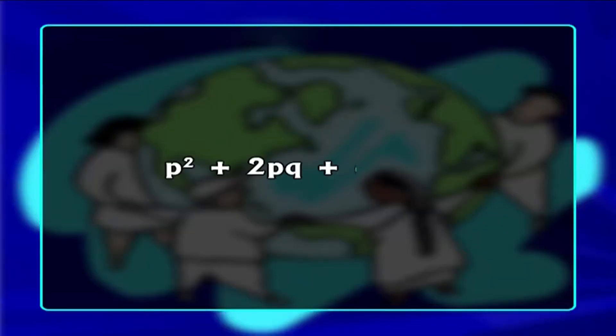In other words, if we know the frequencies of the relevant alleles, we can predict the frequency of each genotype within a population, provided these assumptions about that population are met. The genotype frequencies in a population that is in Hardy-Weinberg equilibrium can be expressed as the equation: p² + 2pq + q² = 1. It is pertinent to note that allele frequencies tell us how common an allele is within a population, and genotype frequencies refer to the proportions of different genotypes within a population.